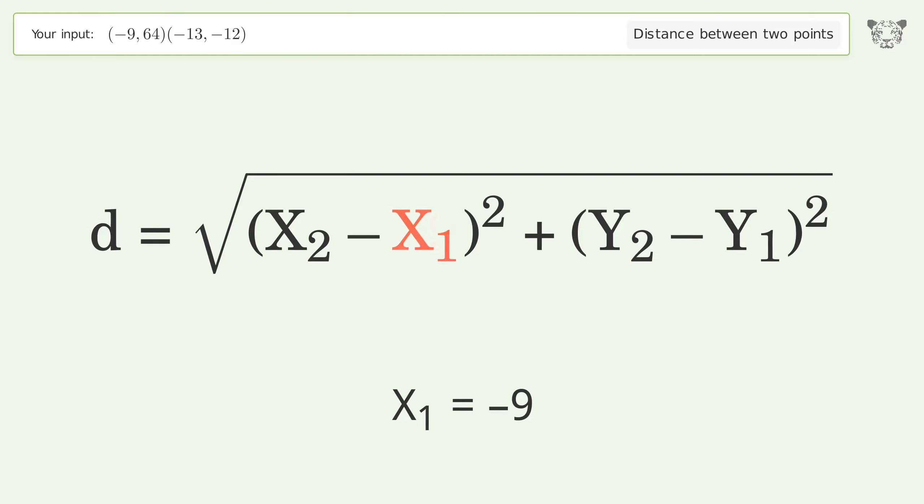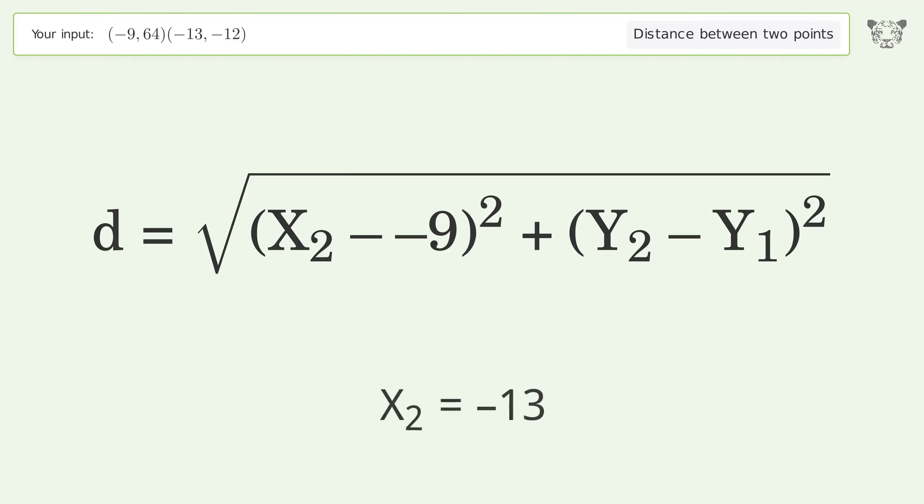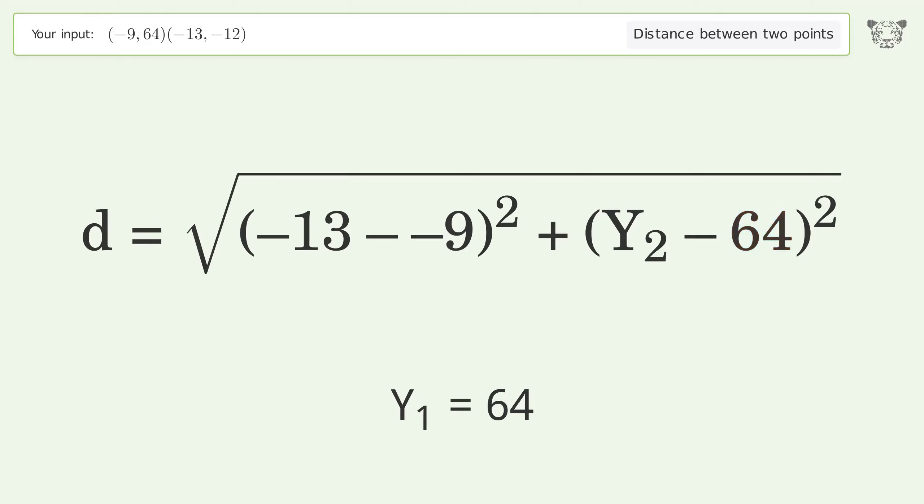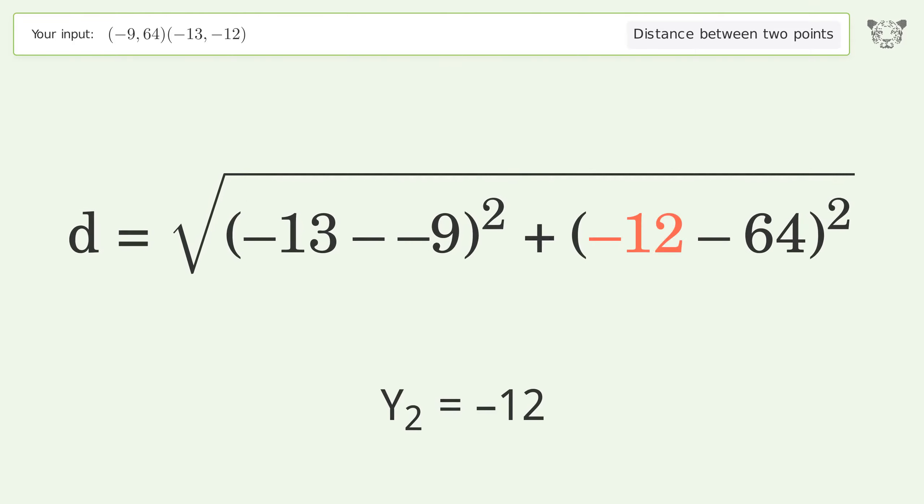Plug the coordinates of the points into the formula: x1 equals negative 9, x2 equals negative 13, y1 equals 64, y2 equals negative 12.